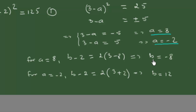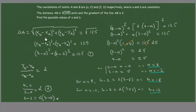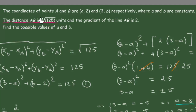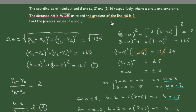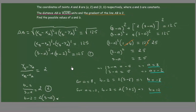So those are the possible values of A and B given the conditions in the exercise. To summarize: we used the distance formula with the given distance of square root of 125 to build the first equation, and the gradient of line AB equal to 2 to build the second equation. Solving this system gives A equals 8 with B equals negative 8, or A equals negative 2 with B equals 12. Thank you for watching!